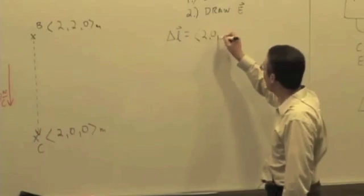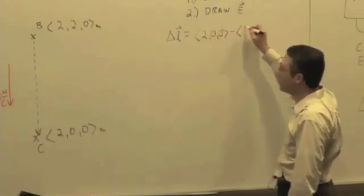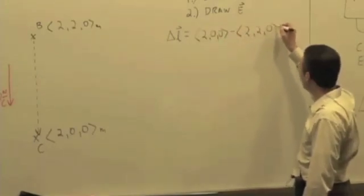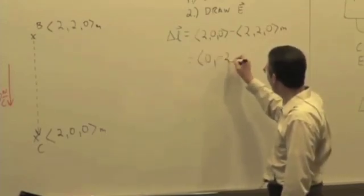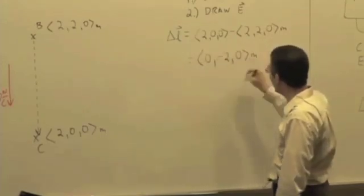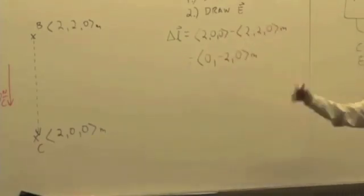So 2, 0, 0 minus 2, 2, 0 meters. And we get 0, negative 2, 0 meters. It has a negative Y component. It's pointing downward, all right?